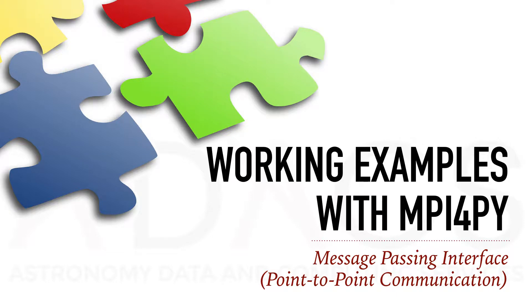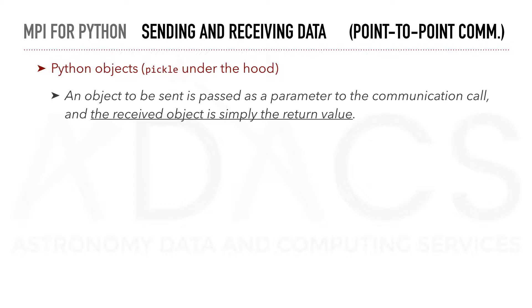In this section, we will take a closer look at point-to-point communication. To get started, let's first look at sending and receiving data using generic Python objects. In this mode of operation, the object to be sent is passed as a parameter to the communication call, and the received object is simply the return value.